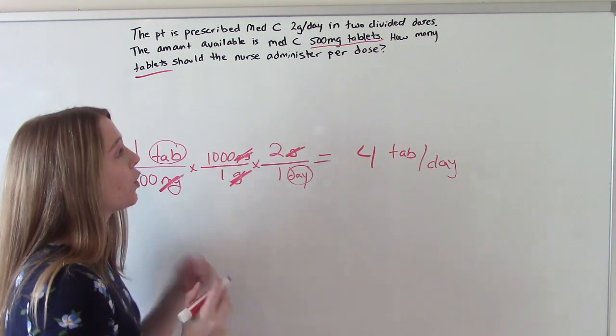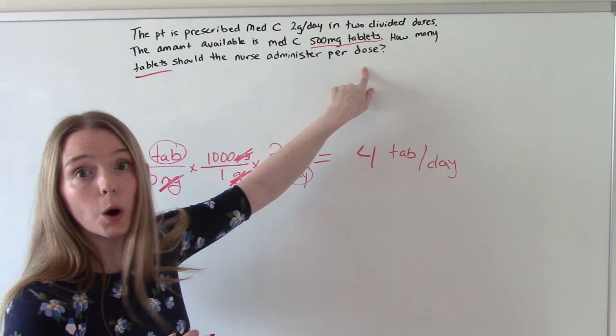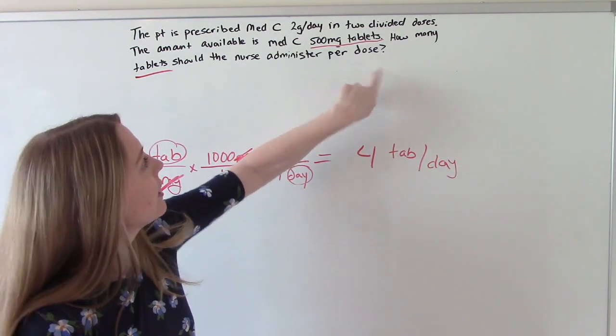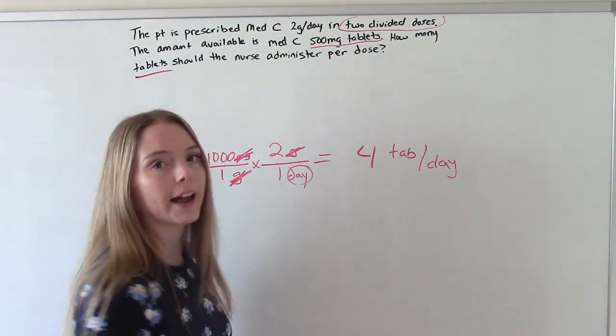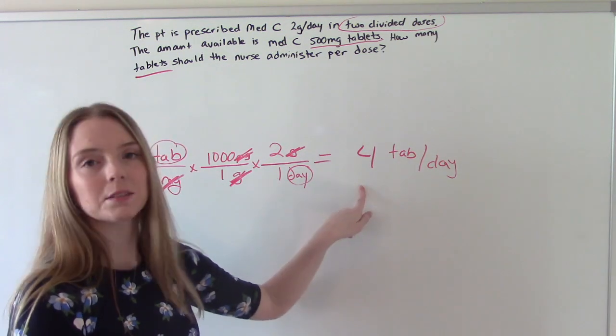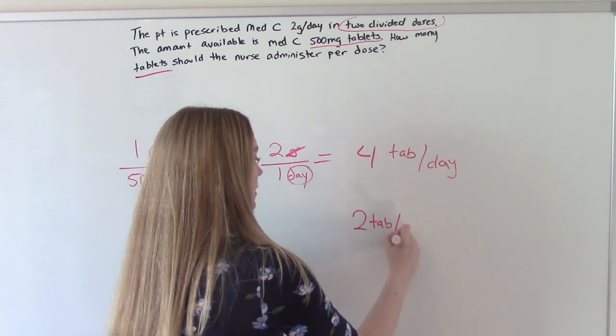Now, the question was not asking tablets per day. It was asking tablets per dose. So how many doses are we giving in one day? Two, because it's two divided doses. So there is an extra step with this. So all we have to do is divide this by two, and then we get two tablets per dose.